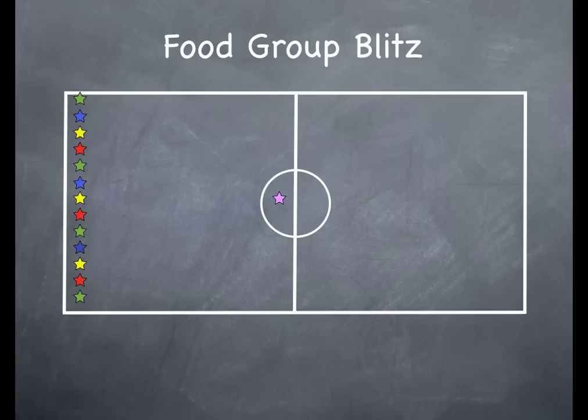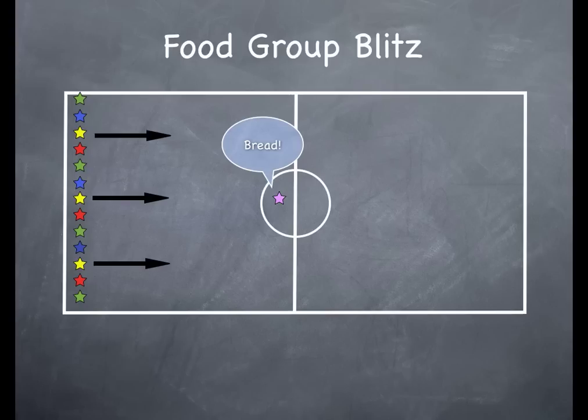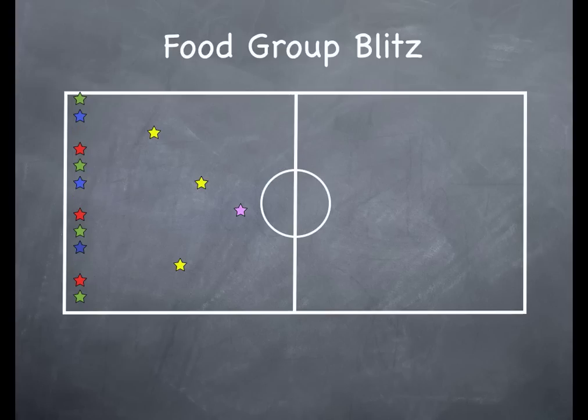On the start, the chef is going to call out a type of food. So in this case it was bread. In the case of bread, it's the greens group. So any of the green players will then run across and try to get to the other end without getting tagged. And it looks like those players have done that.